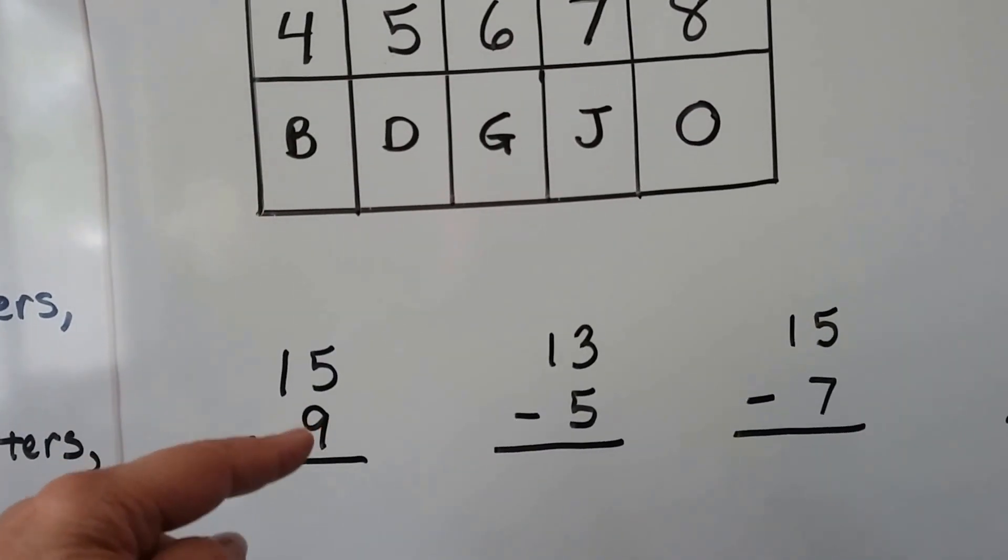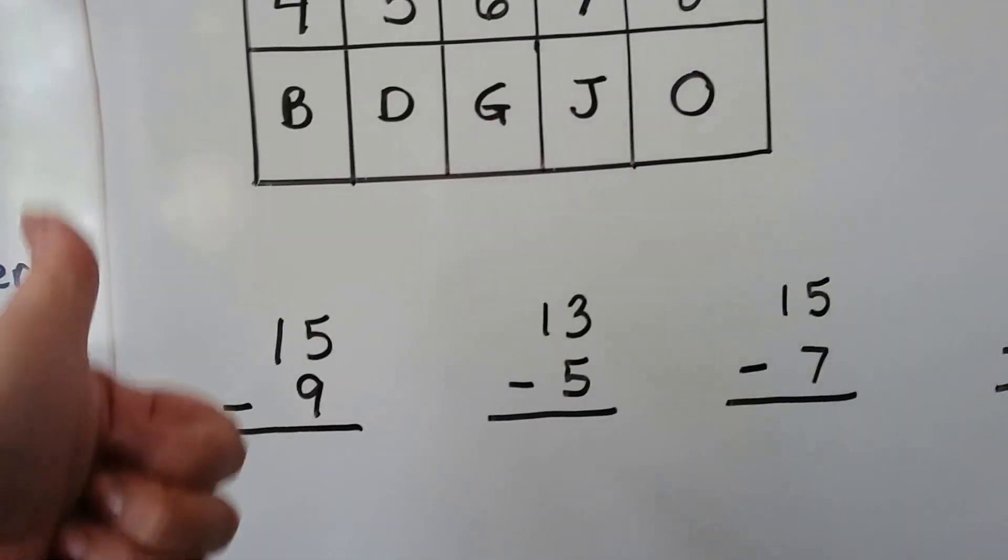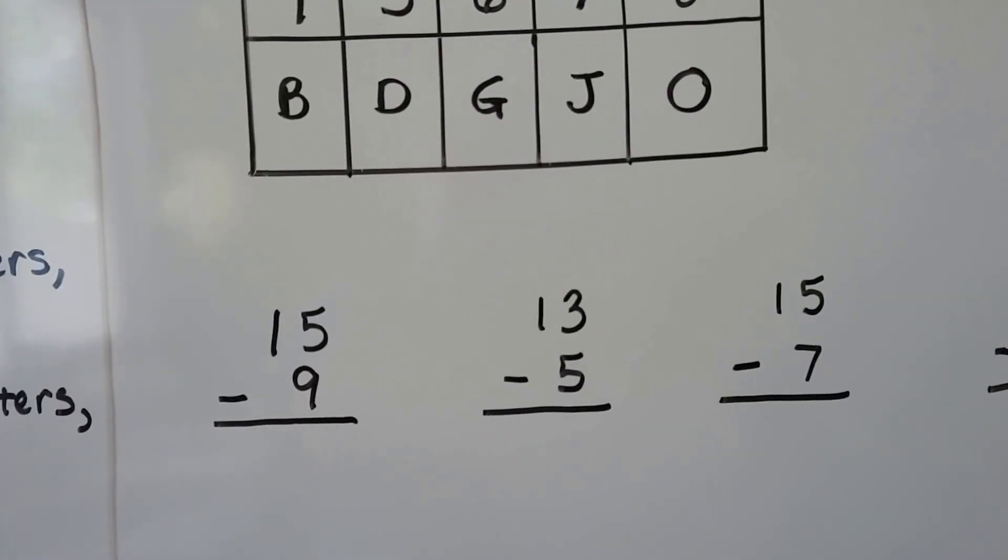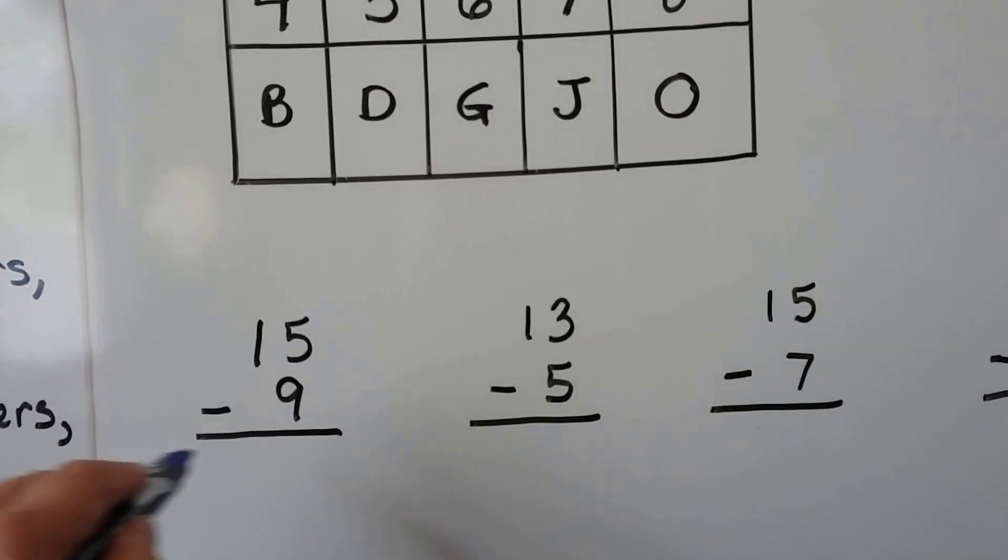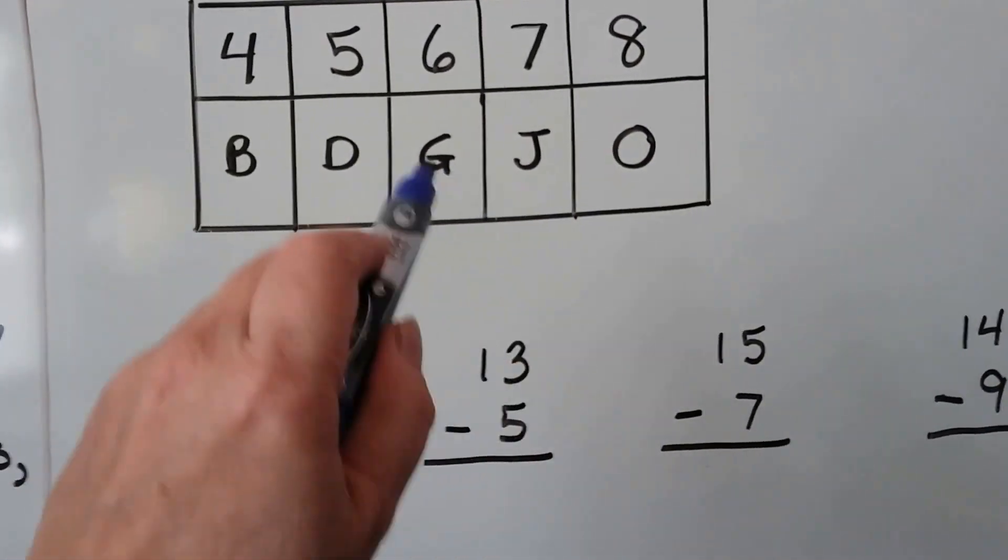Let's try doing the second way. 9, 10, 11, 12, 13, 14, 15. That's a 6. 15 minus 9 is 6. What's a 6? It's a G.